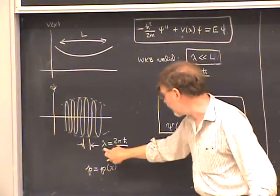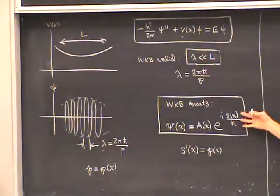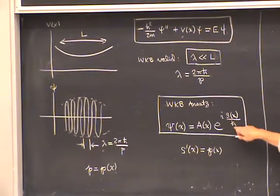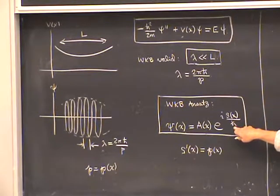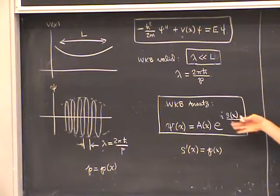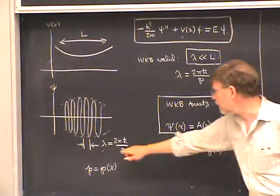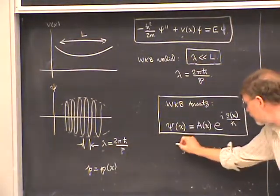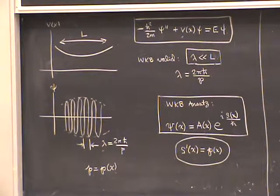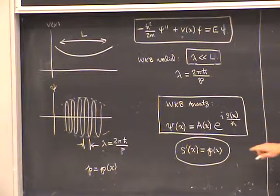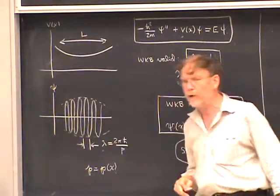In a single wavelength, which is regarded as a short range here, the phase changes by 2π. If you think of h-bar as being small, the rapidly varying phase is achieved because with h-bar in the denominator, a small change in x produces a large change in the phase. By requiring the change in s equal to 2π when delta-x equals lambda, we derived that s′(x), the derivative of the function appearing in the phase, is equal to the momentum function p(x) from the de Broglie relation.